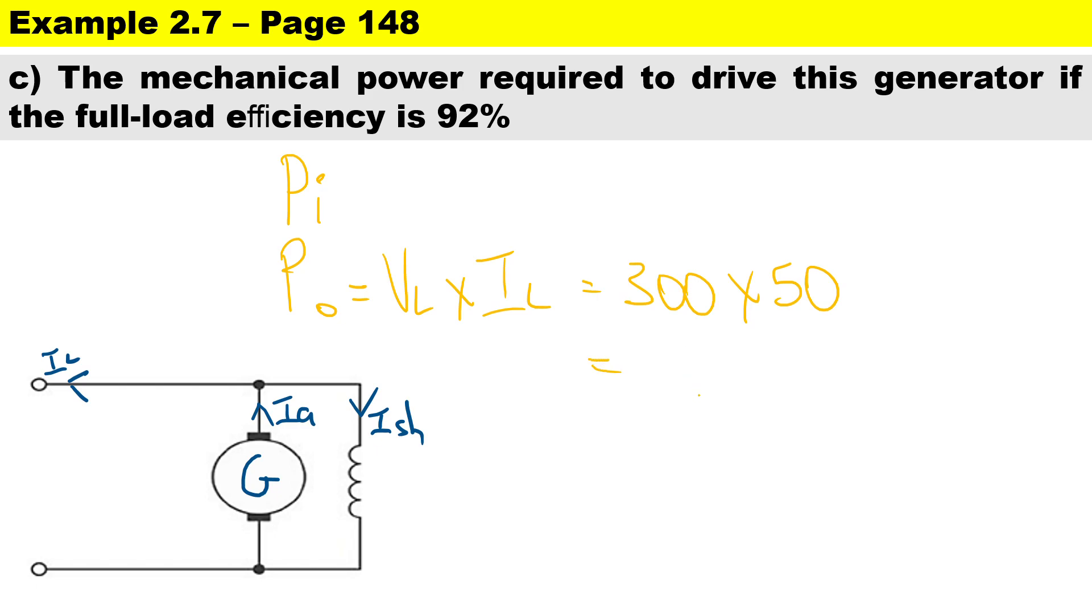Okay, so to calculate the input power we will say the output power of 15,000 watts divided by the efficiency of 0.92. Therefore the input power is going to be 16,304 watts.